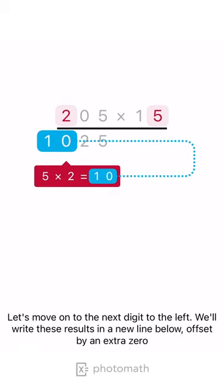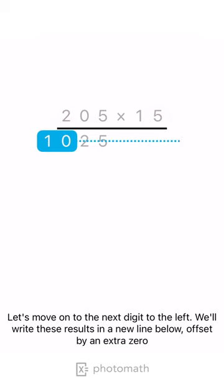Let's move on to the next digit to the left. We'll write these results in a new line below, offset by an extra 0.